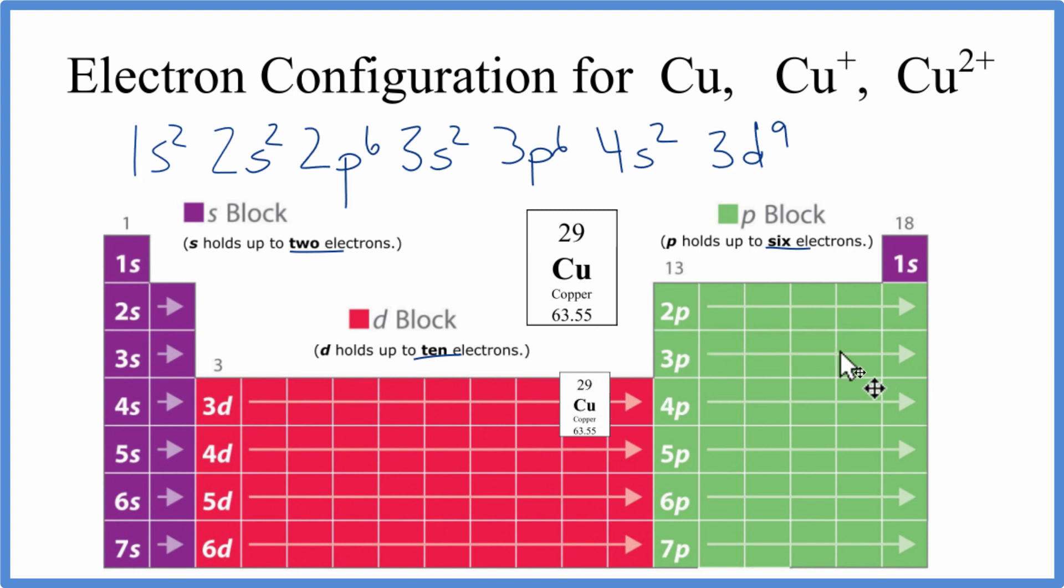Note that once we get into the transition metals, the 4s is most often written after the 3d. These electrons here will be the first ones that are ionized, so it does make sense for them to come afterwards. So we have this electron configuration for copper, which isn't correct. So let's write the correct electron configuration now.